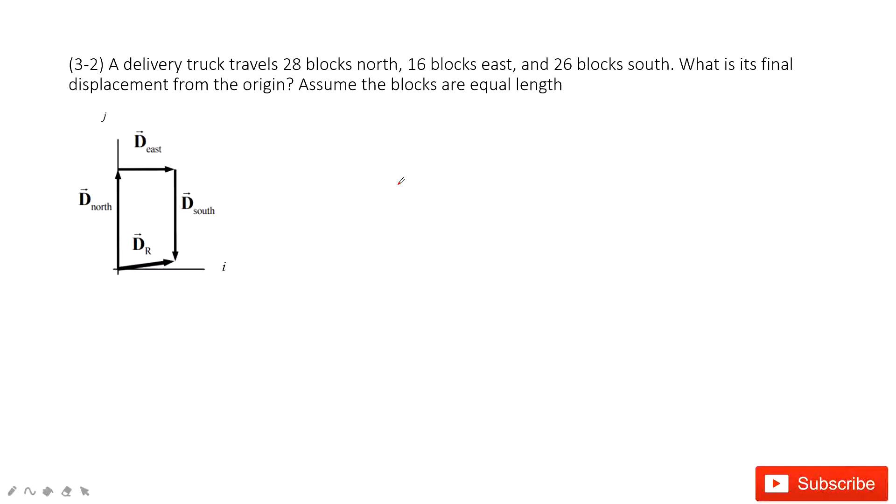In this one, this is still the addition of vectors. First thing we can draw a picture, see what happens. We can see that there are two components, i and j.